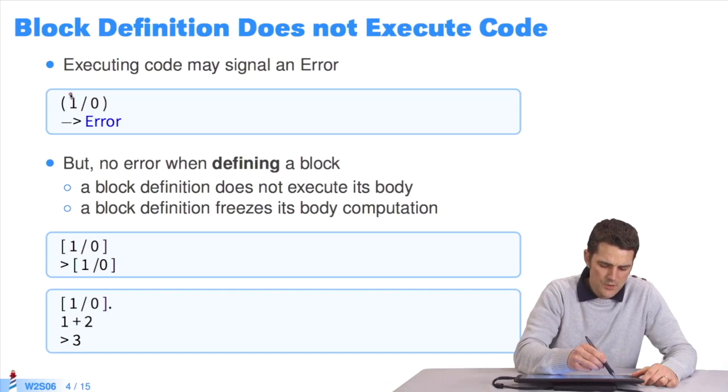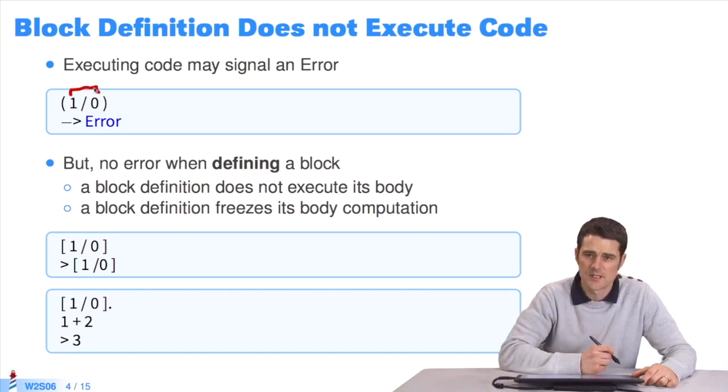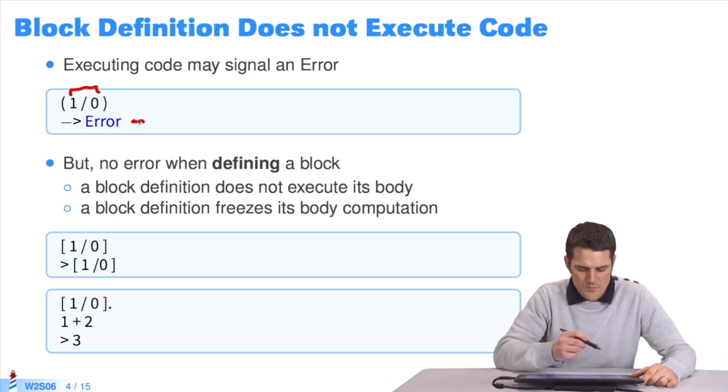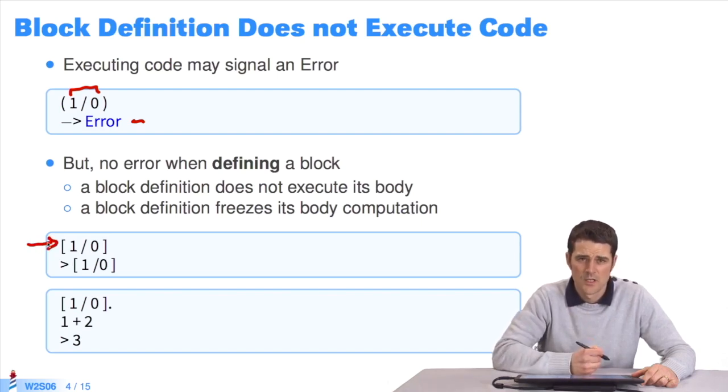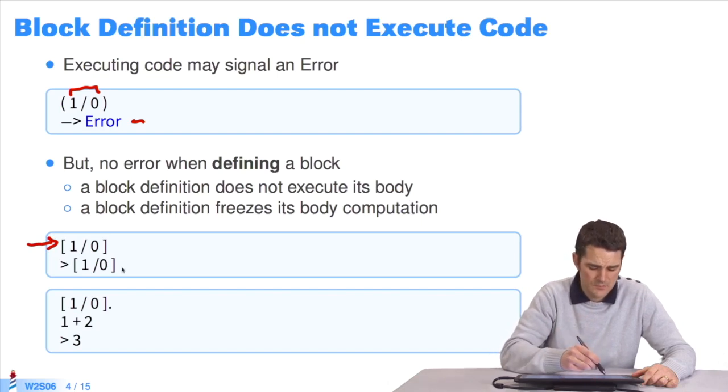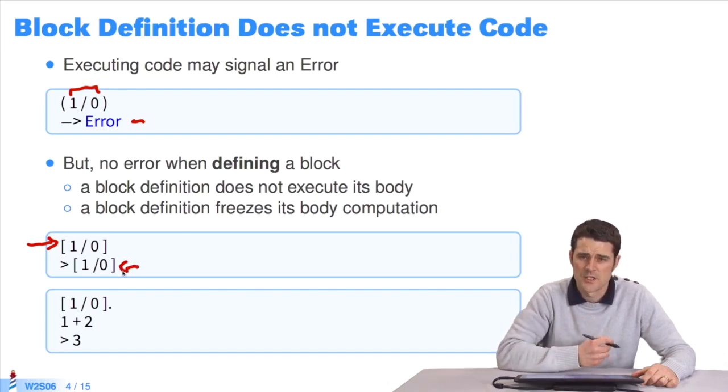This expression, 1 divided by 0, returns an error when executed. Let's encapsulate it in a block. By defining a block that contains the expression 1 divided by 0. If I evaluate this block's definition, nothing happens. No error. It returns the block.